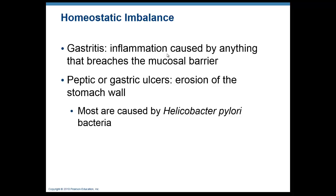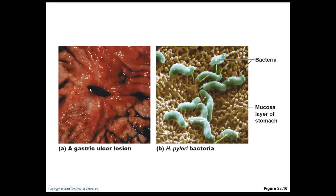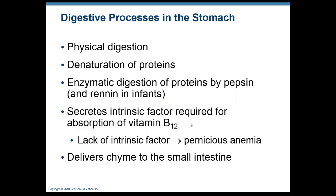A stomach ulcer caused by the bacteria Helicobacter pylori can be treated with antibiotics. Physical digestion involves peristaltic contractions moving contents to form liquid chyme, breaking down proteins with pepsin and hydrochloric acid, secreting intrinsic factor, and delivering that liquid chyme to the small intestine.